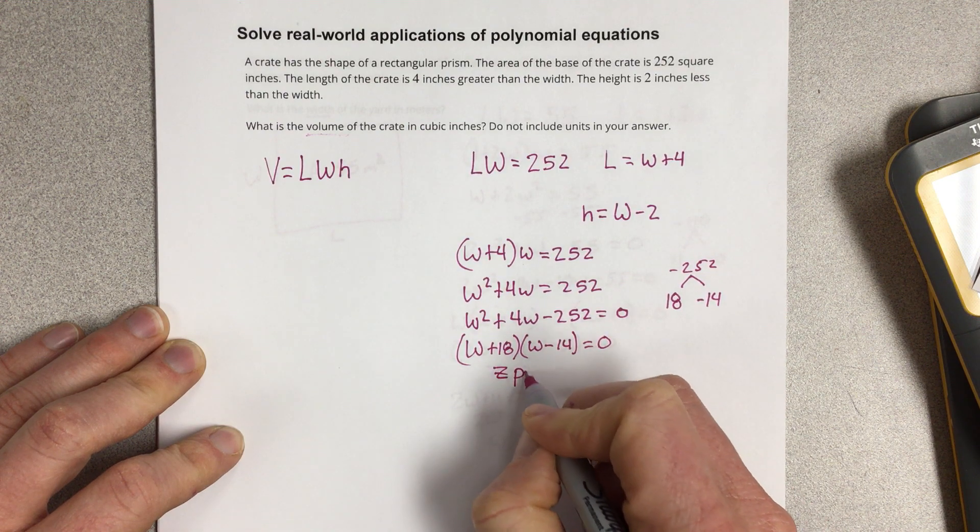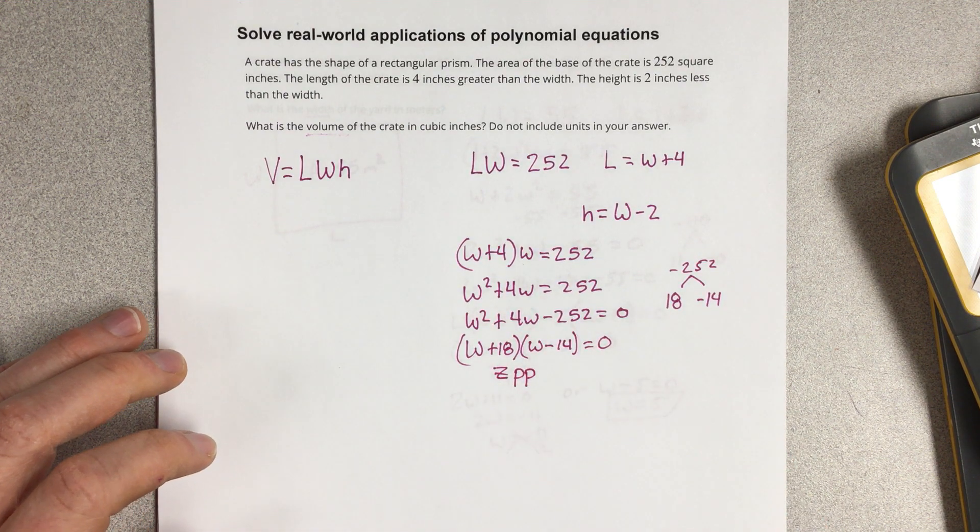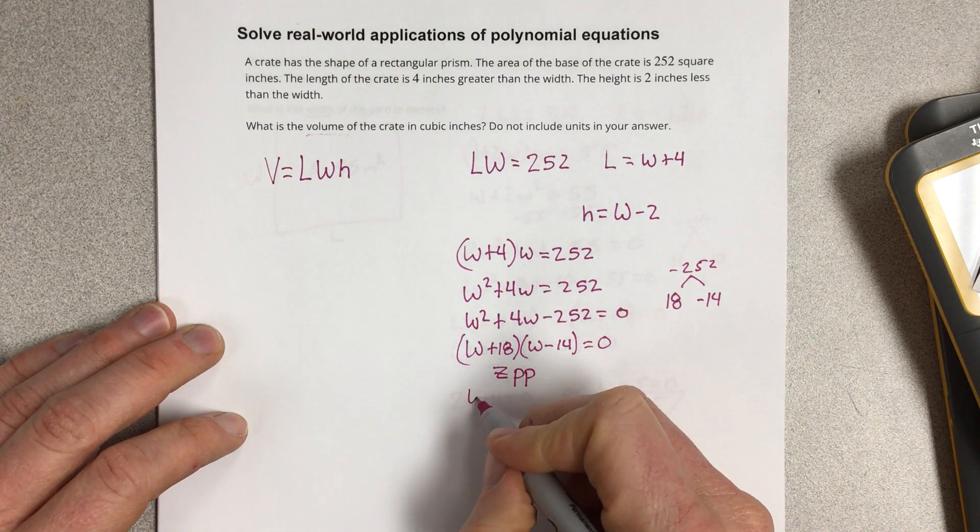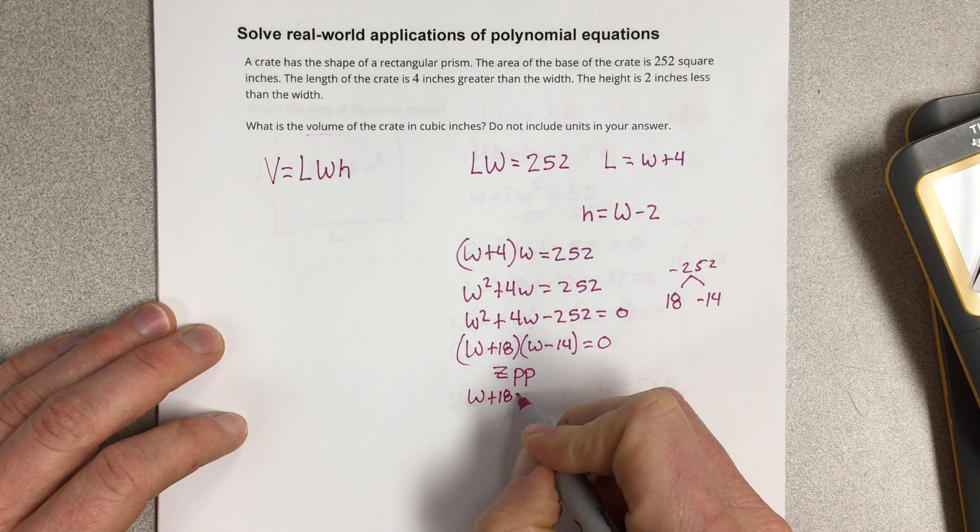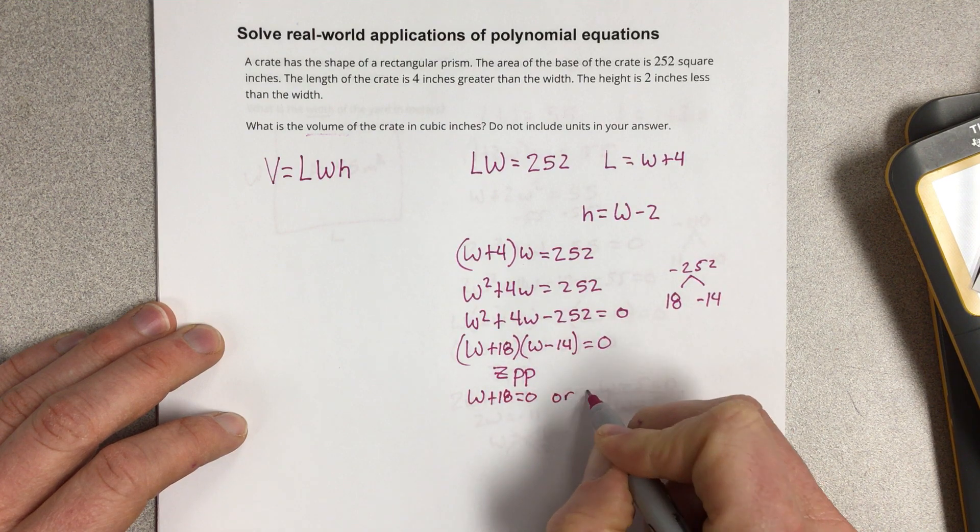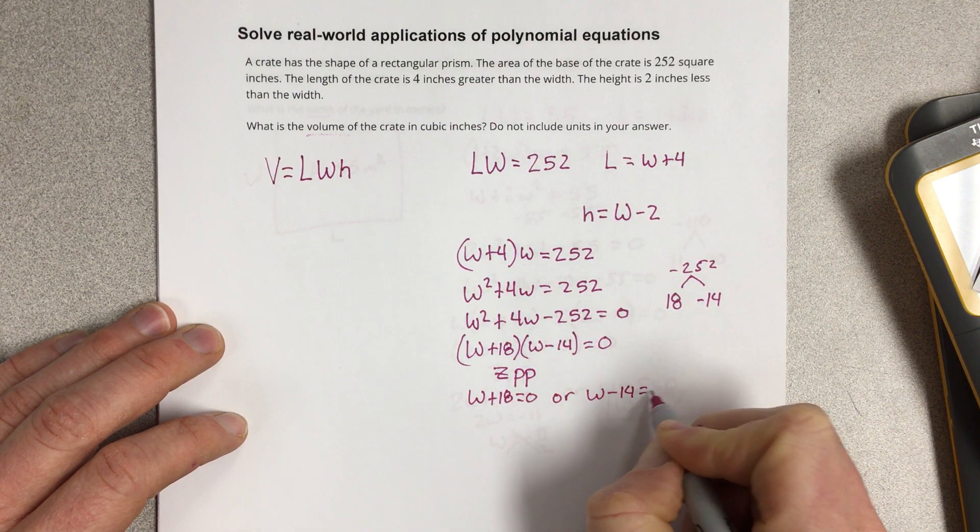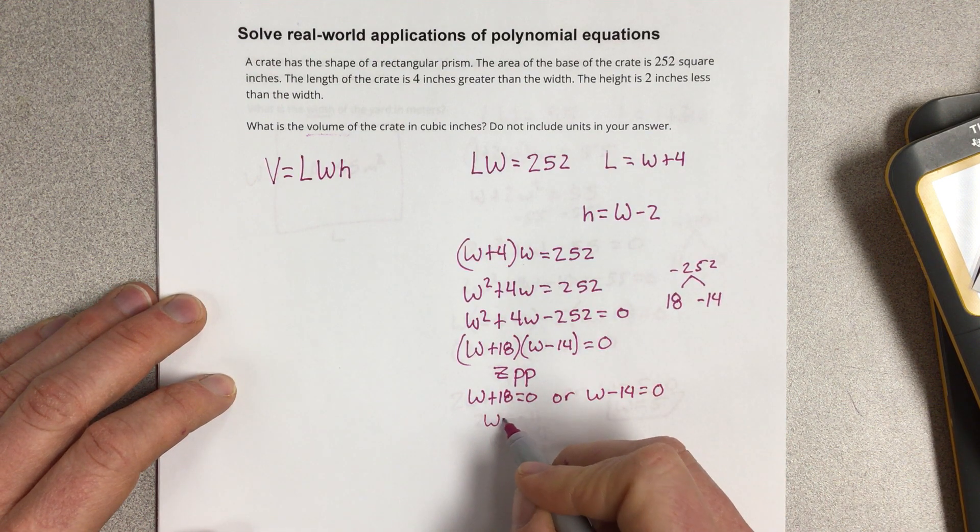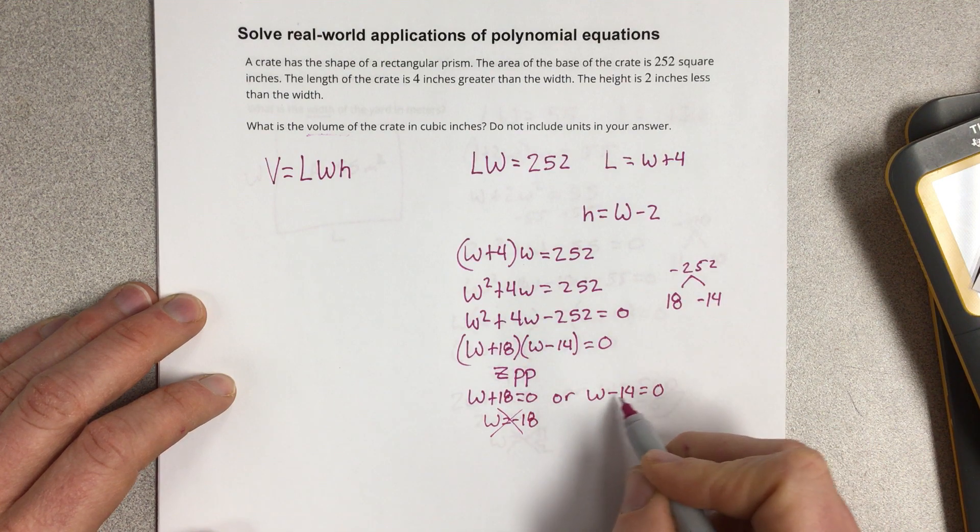So we can use ZPP. When we use ZPP, we can say that W plus 18 equals 0 or W minus 14 equals 0. Solve each side. We get W equals negative 18, which we can't have our width being negative, so we're going to cancel that out. Solve this side. That'd be W equals 14.